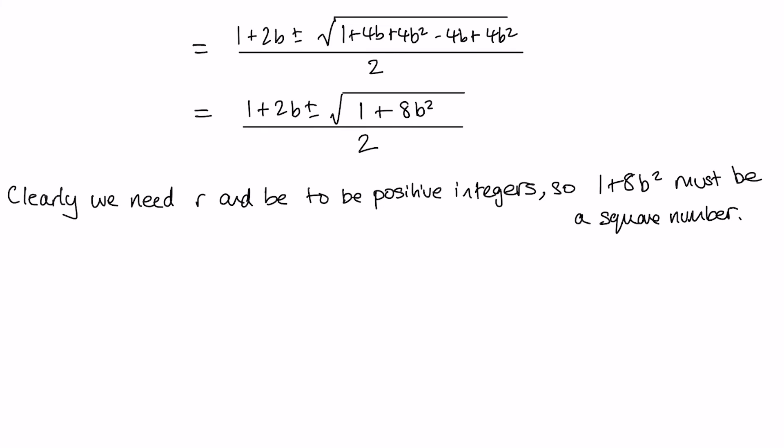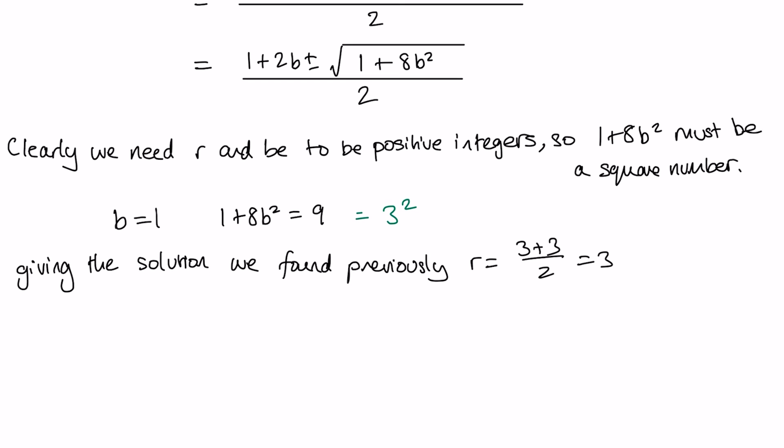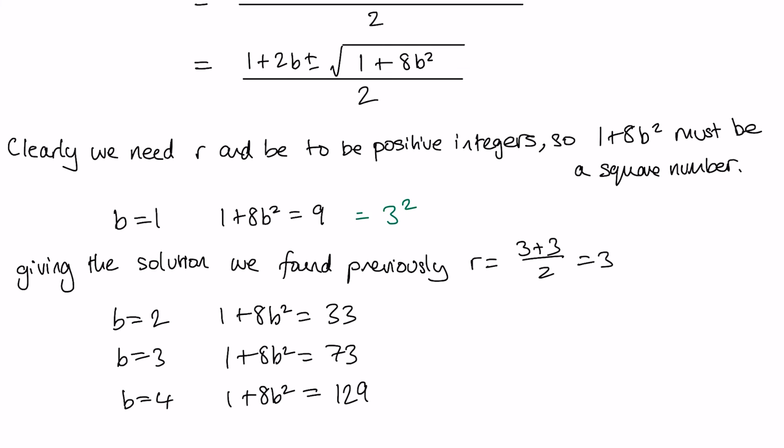So if we take b=1, we get 1+8b²=9, that's 3², and that gives us the solution that we found previously. We can try a few more values for b: 2, 3, 4, 5, until we get to 6, which is the next time we get a square number, 17².